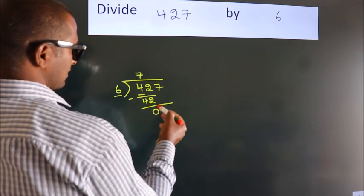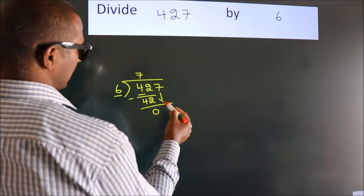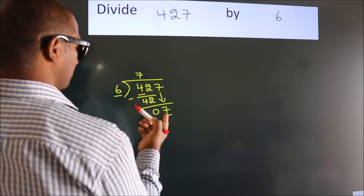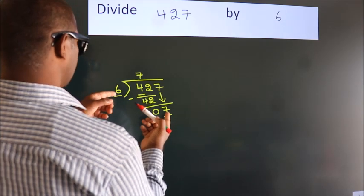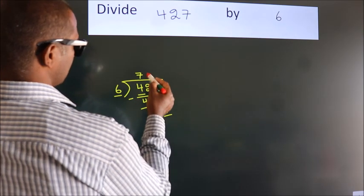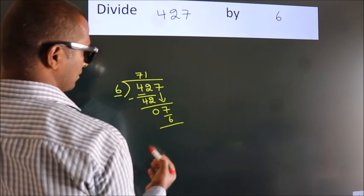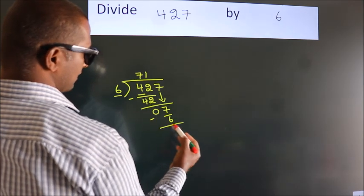After this, bring down the beside number. So 7 down. A number close to 7 in 6 table is 6 times 1 is 6. Now we subtract. We get 1.